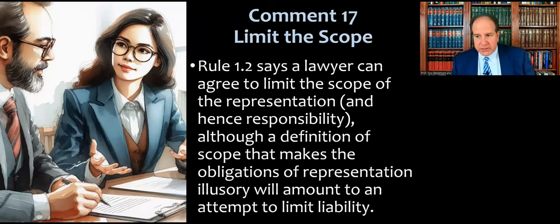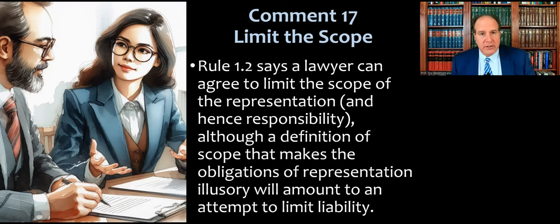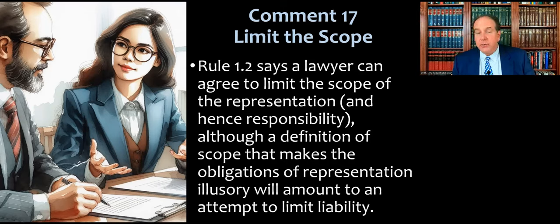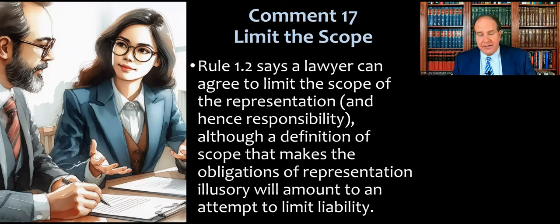We have another rule, 1.2, about the scope of a representation and allocation of authority. That rule does allow lawyers to limit the scope of the representation, and that, in effect, can limit your responsibility overall. In other words, if you were really clear in your representation agreement with the client that you were only going to do the trial or only transactional work and no litigation, then they can't really sue you — or it's much harder for them to — for stuff that happens after that ends.